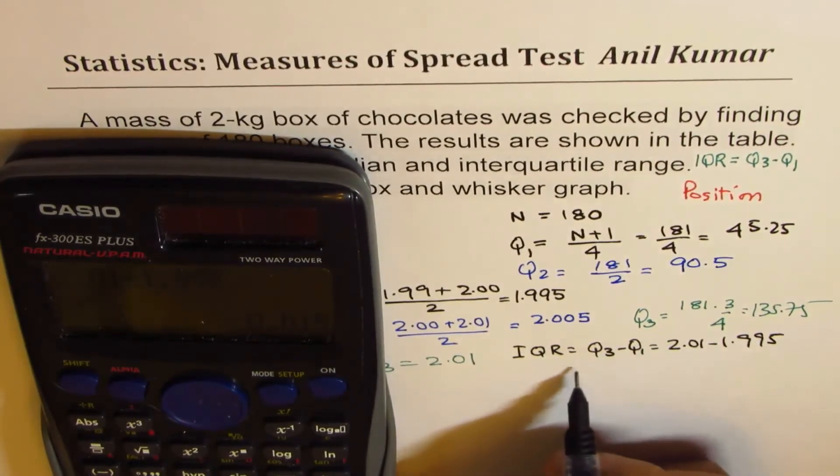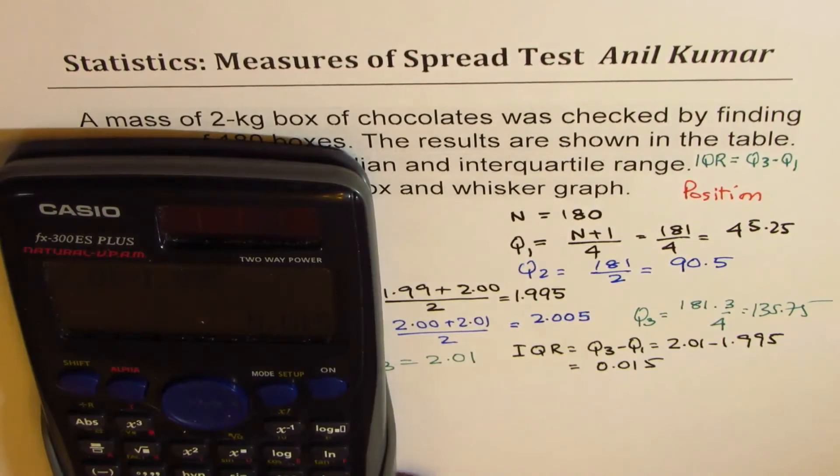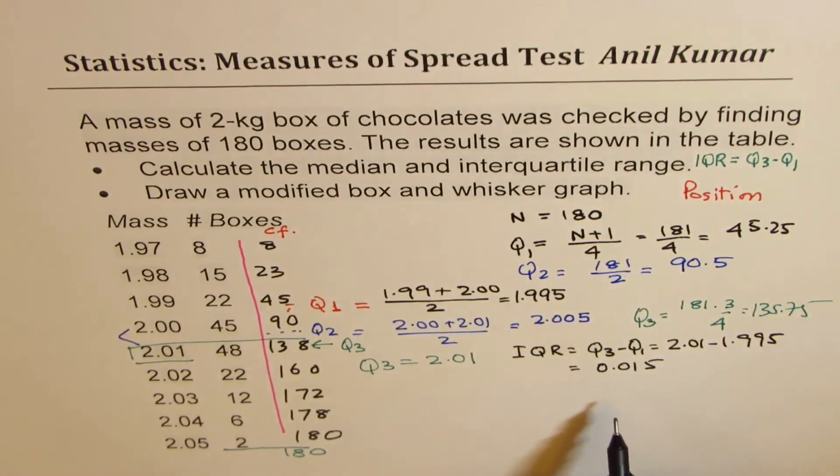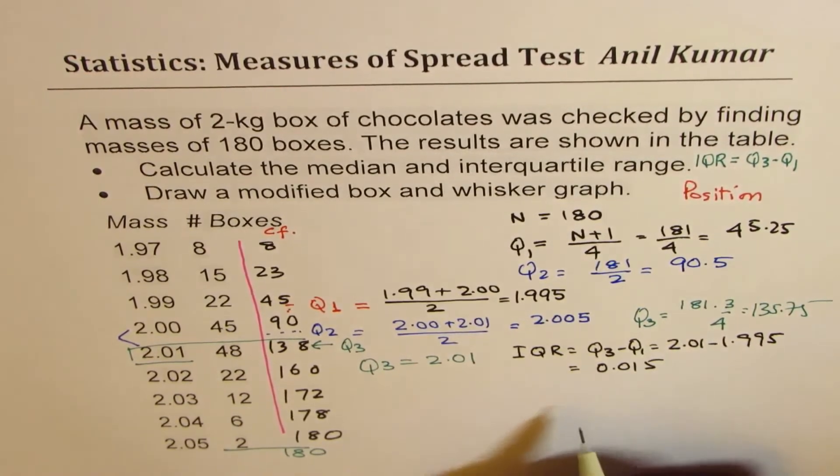So IQR, interquartile range, is 0.015. So that becomes IQR. Now let's check for outliers because we are looking for modified, we should check for outliers also.